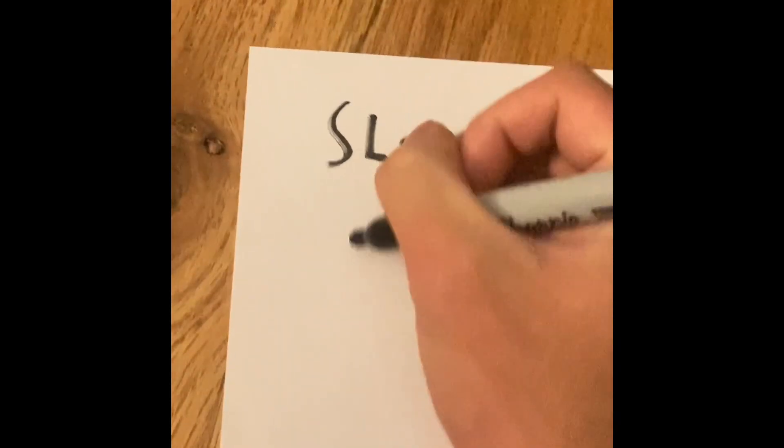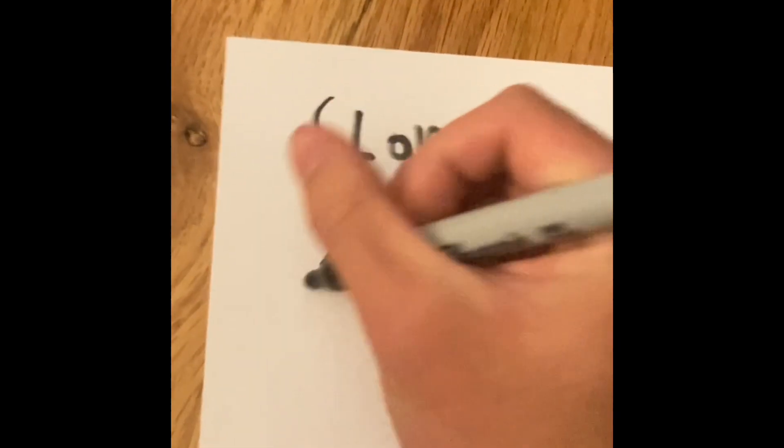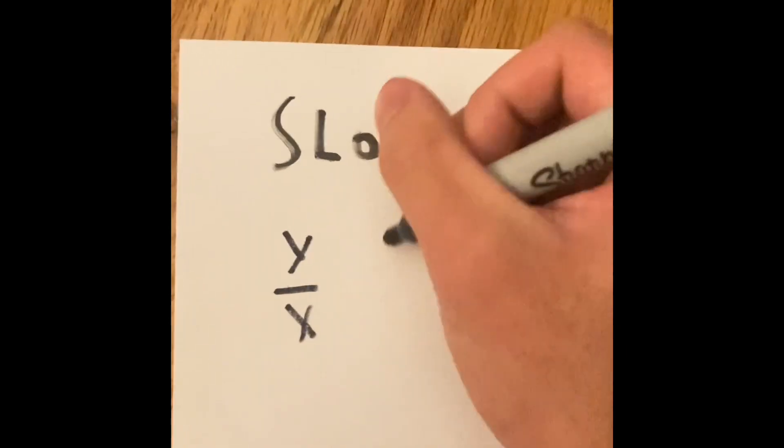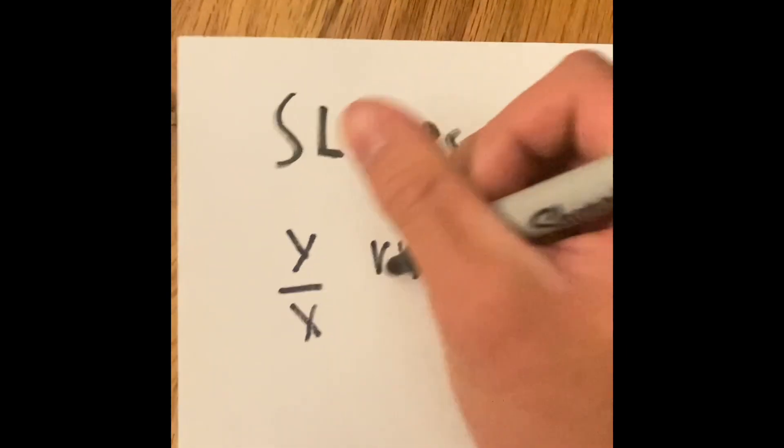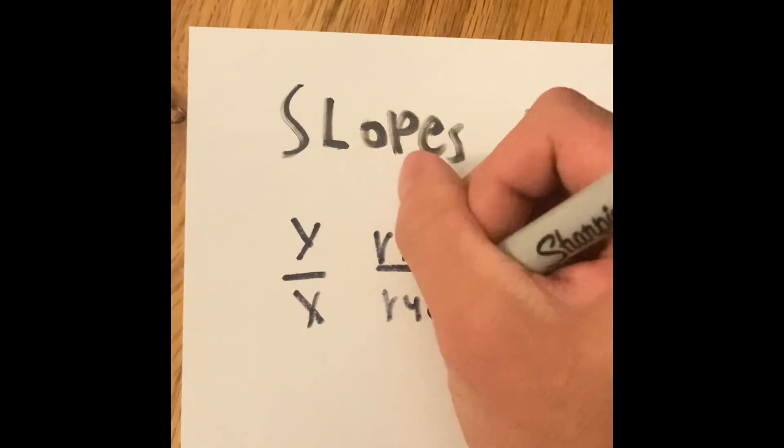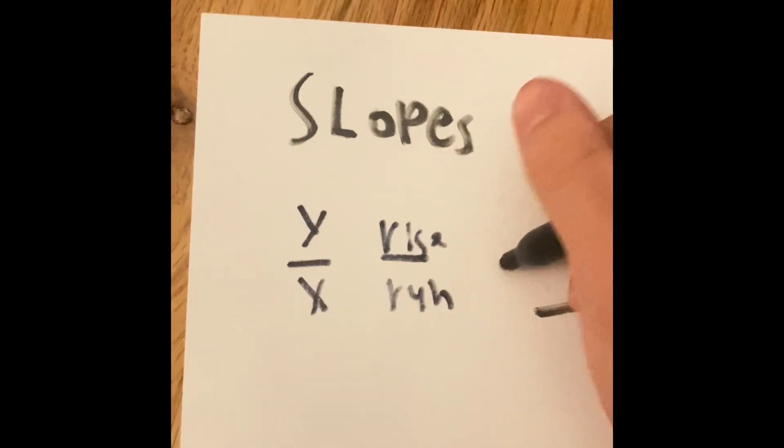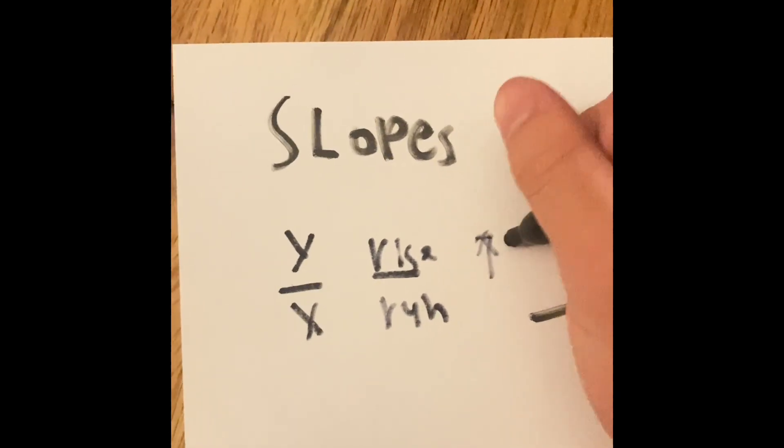We already know that slope is y divided by x, or I should say rise divided by run. So we go up, then we go right.